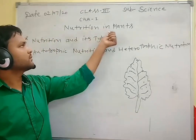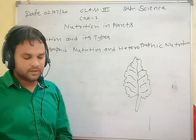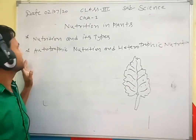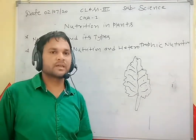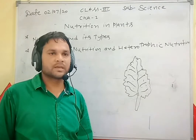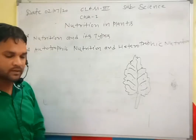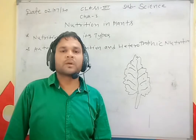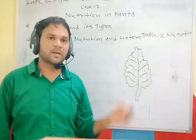The topics we will cover are: Plants and its Types, and the second point is Autotrophic Nutrition and Heterotrophic Nutrition — which type of plants observe what is Autotrophic and Heterotrophic Nutrition. So let us start the chapter.